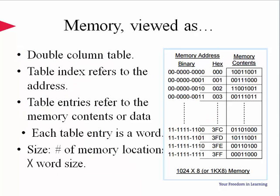A memory can be viewed as a two-column table, where the first column shows the memory address or index, and the second is the value stored in that memory location. Each table entry or row in this table is called a memory word. The size of the memory is given by the number of memory locations multiplied by the word size.